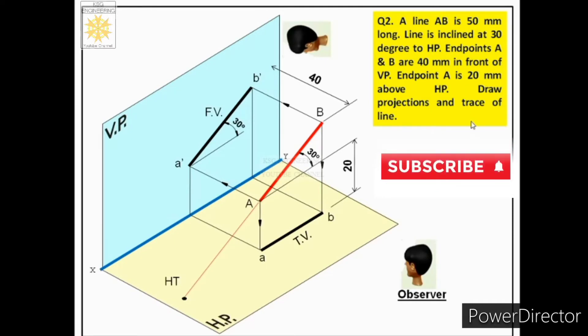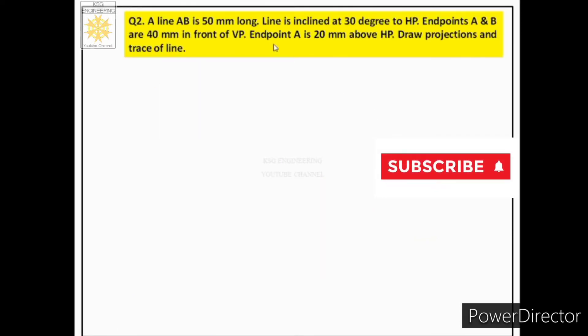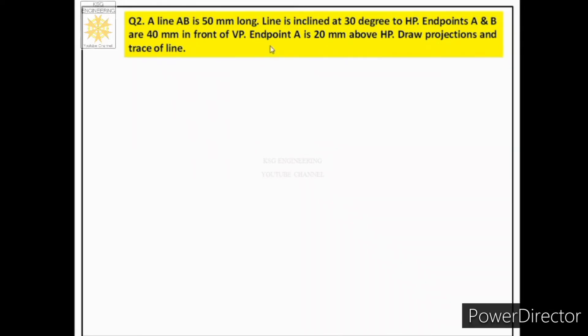Now let us see how to plot this case on paper. The first step is to identify the quadrant of the problem. He says in front of VP and above HP — from these two words we can judge that the quadrant is first. After identification of the first quadrant, the second step is to draw that quadrant on paper.